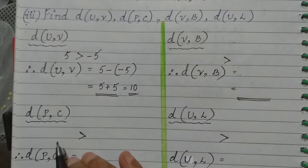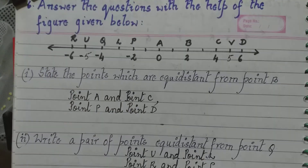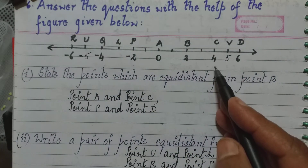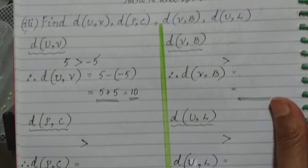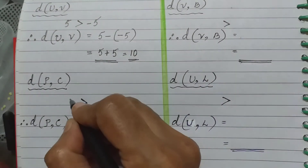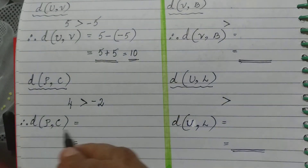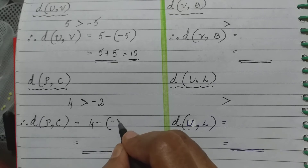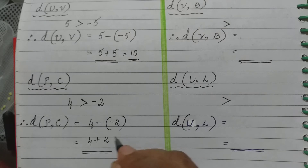Next, find the distance between points P and C. The coordinate of P is minus 2 and C is 4. Since 4 is greater than minus 2, the distance between P and C is 4 minus (minus 2), which is 4 plus 2, which equals 6.